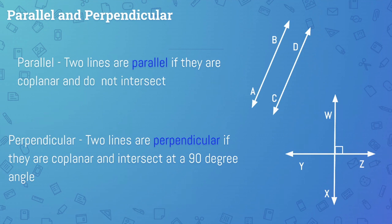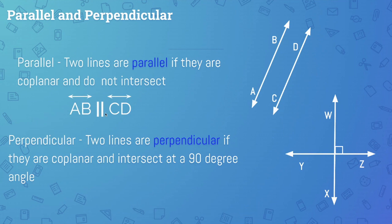Can you imagine what it would be like if two lines were non-coplanar and don't intersect? Well, that's going to be our next part of our lesson. One other thing about parallel lines: the notation. The notation is line AB — this symbol, these two straight lines, means parallel — is parallel to line CD. On the diagram, to indicate that two lines are parallel, you'll see an arrowhead somewhere on the line and another corresponding arrowhead in the same position. These two arrowheads tell you that those two lines are parallel.